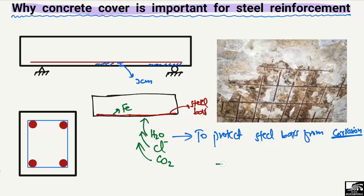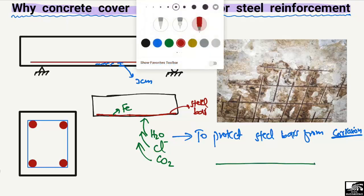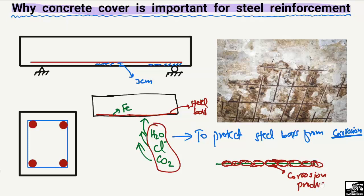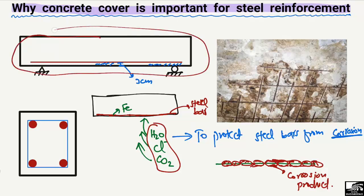There are multiple different elements that react with the iron present in the steel bar and produce corrosion products. You will see corrosion products form very quickly when no concrete cover is provided. Due to these corrosion products forming around the steel bar, the strength of the steel bar is reduced. As a result of this reduction in steel bar strength, the overall bearing capacity of the beam is also reduced.